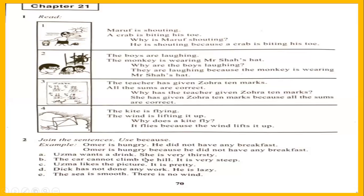Uzma wants a drink. She is very thirsty. Uzma wants a drink because she is very thirsty. There are sentences A, B, C, D, E — these five sentences you have to do in your notebook by using 'because' between the two sentences.